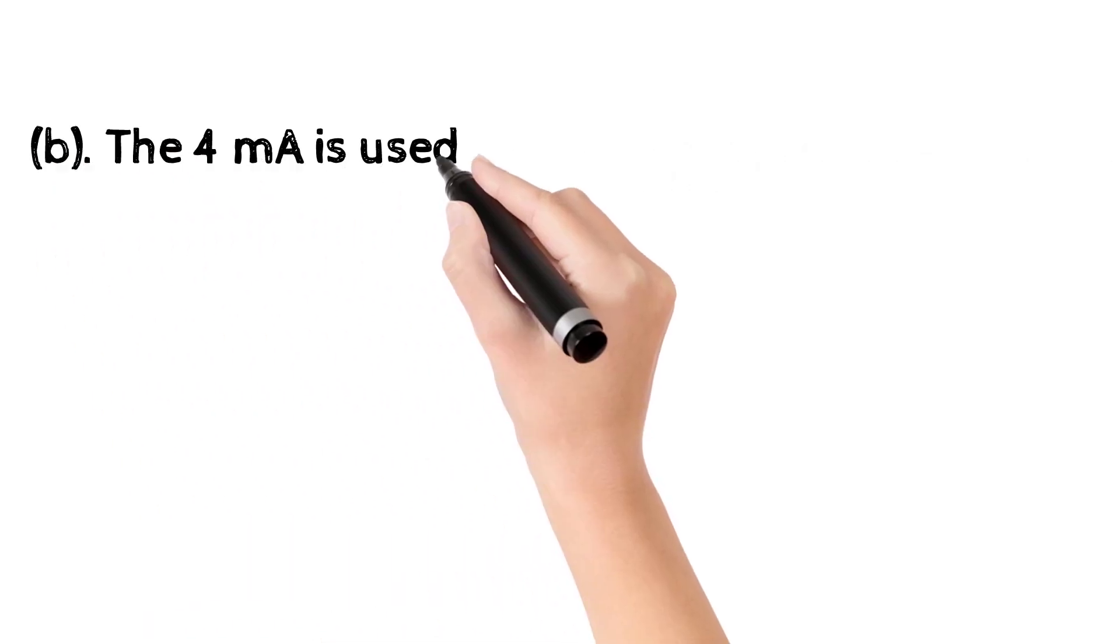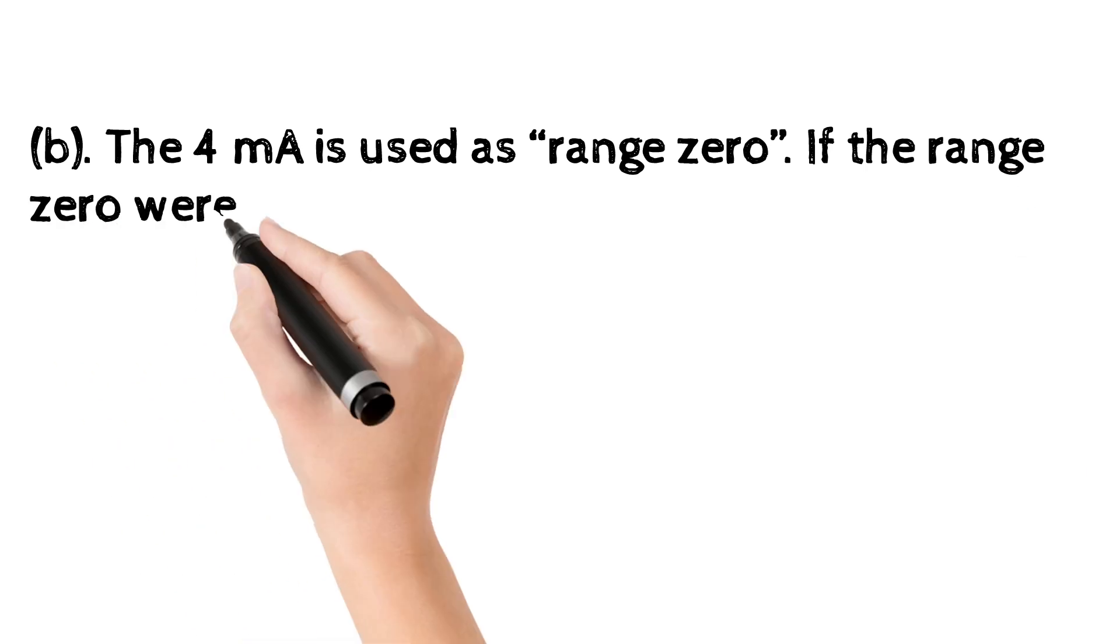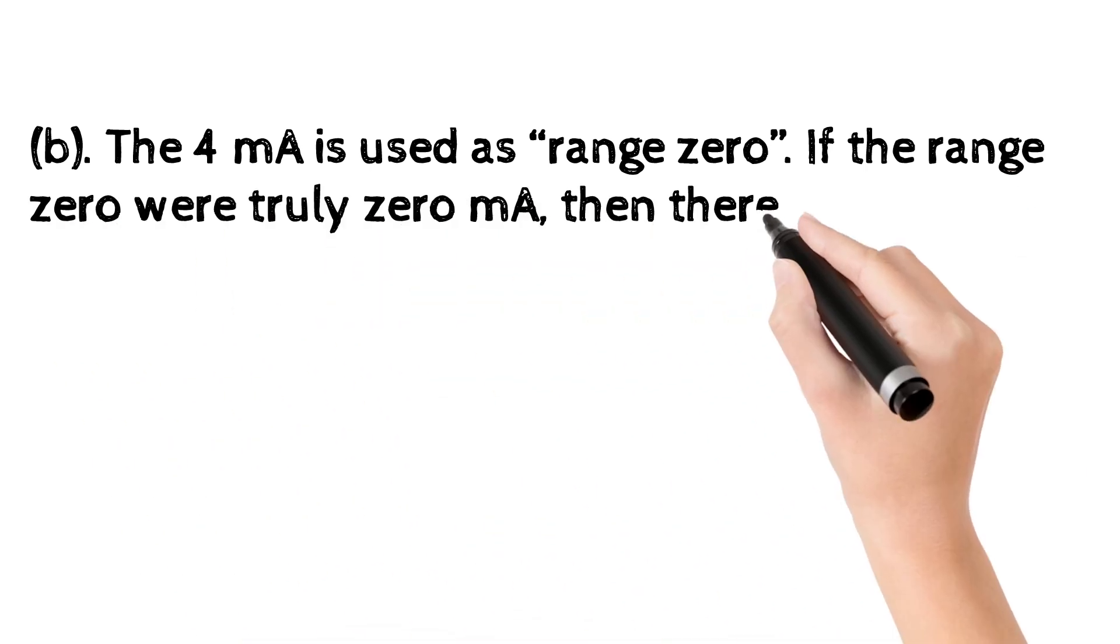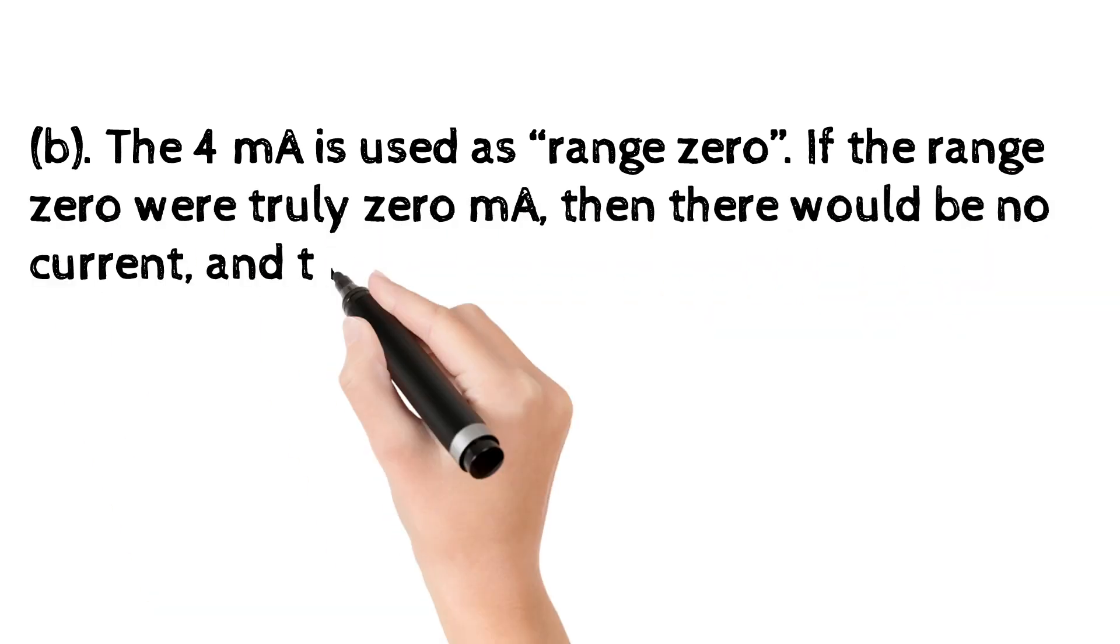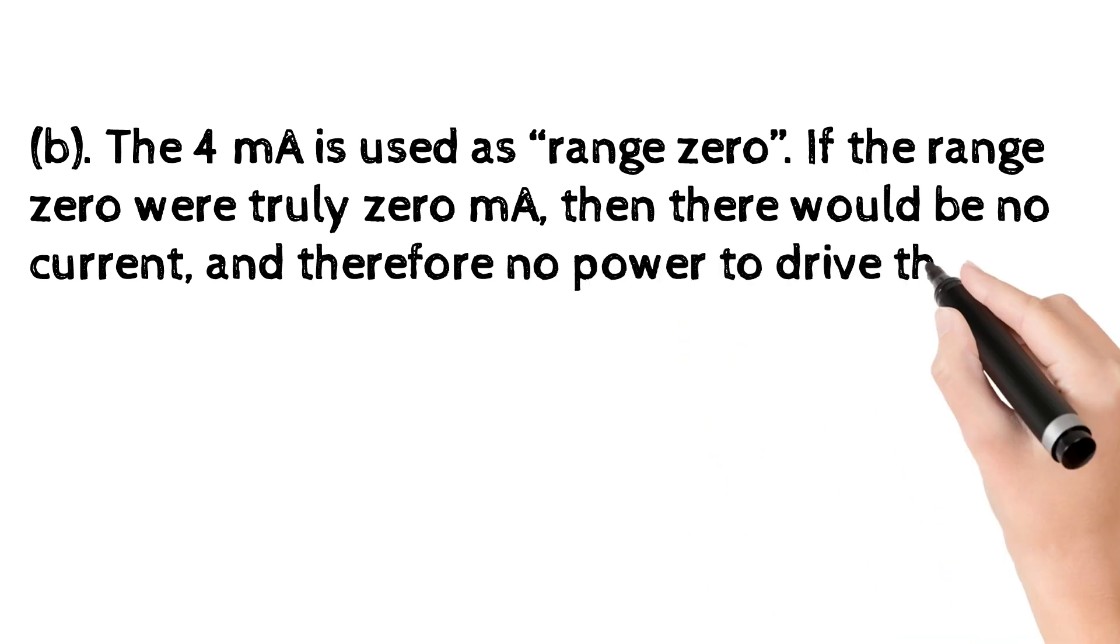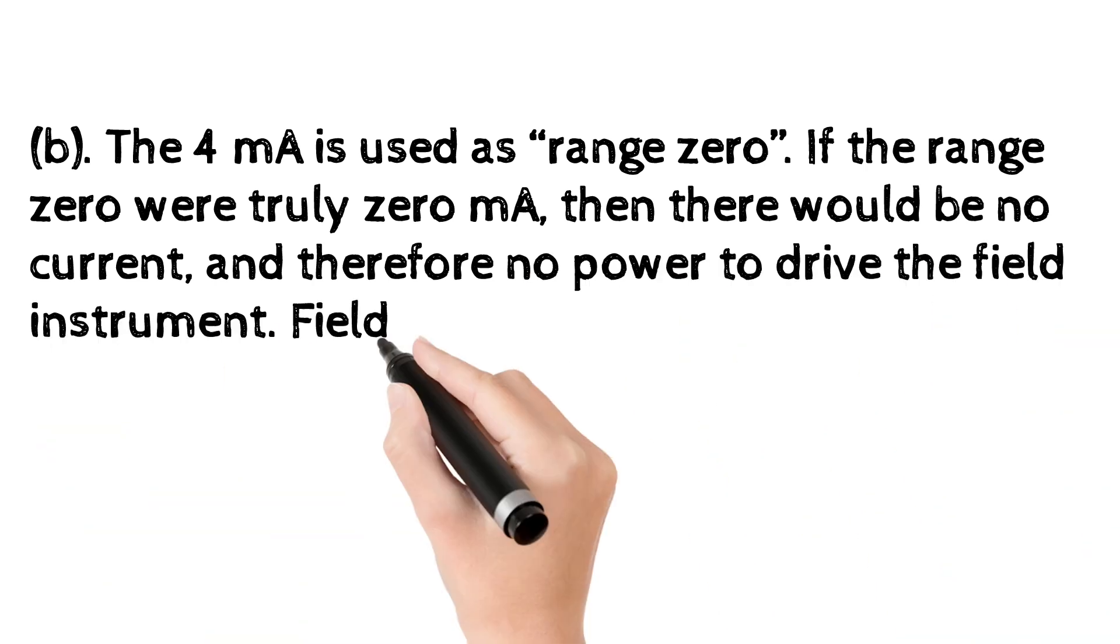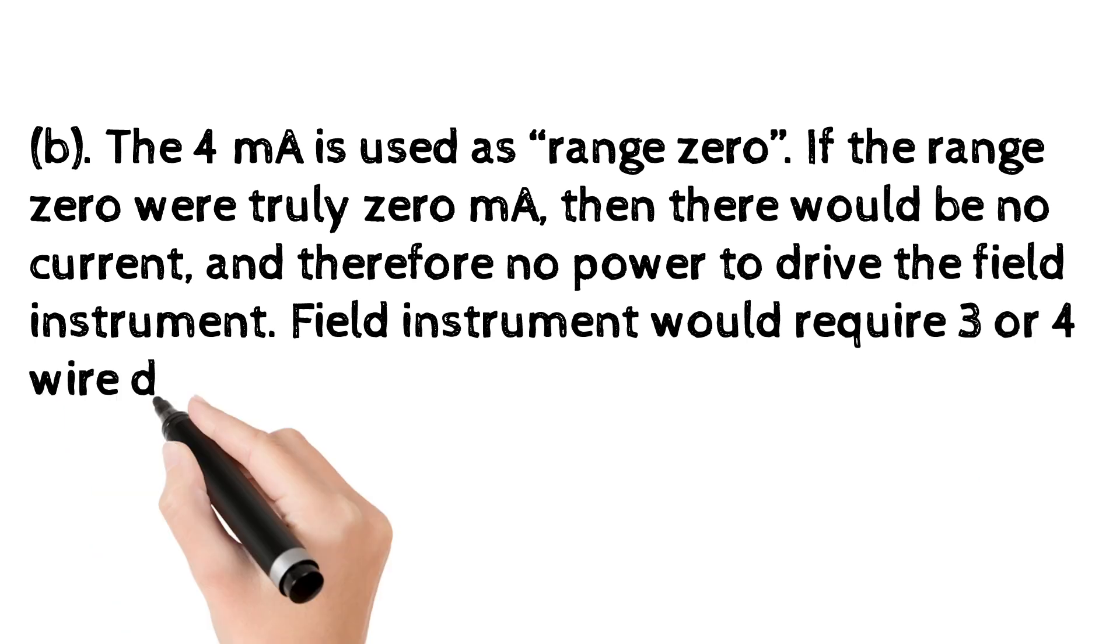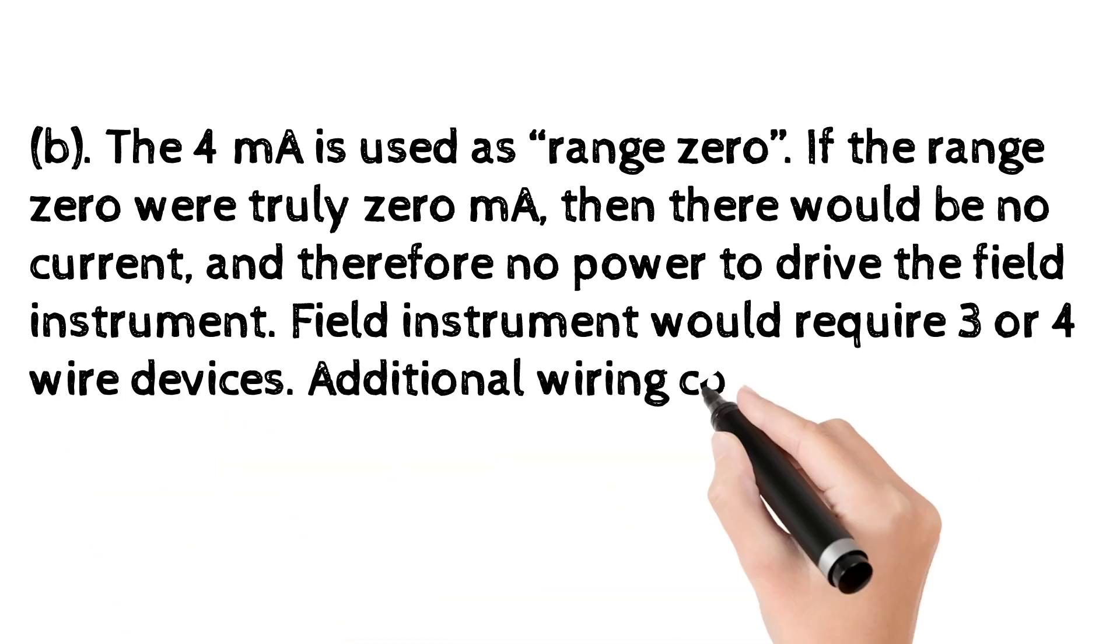1B. The 4 mA is used as range 0. If the range 0 were truly 0 mA, then there would be no current and therefore no power to drive the field instrument. Field instrument would require 3 or 4 wire devices. Additional wiring costs come into account.